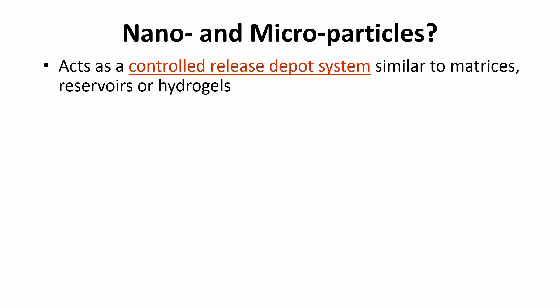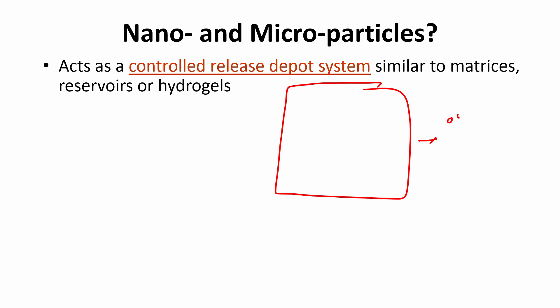Let us start with nano and microparticles. Like what we have discussed in the past with all our initial systems of matrix and reservoir, these are also controlled release depot systems — very similar to matrices, reservoirs, and hydrogels, they can take any of these forms. But now instead of having a big macro device, you have split that into small devices, which allows you to directly inject these devices into the body using a syringe, because a macro device may be 1 centimeter or even larger.